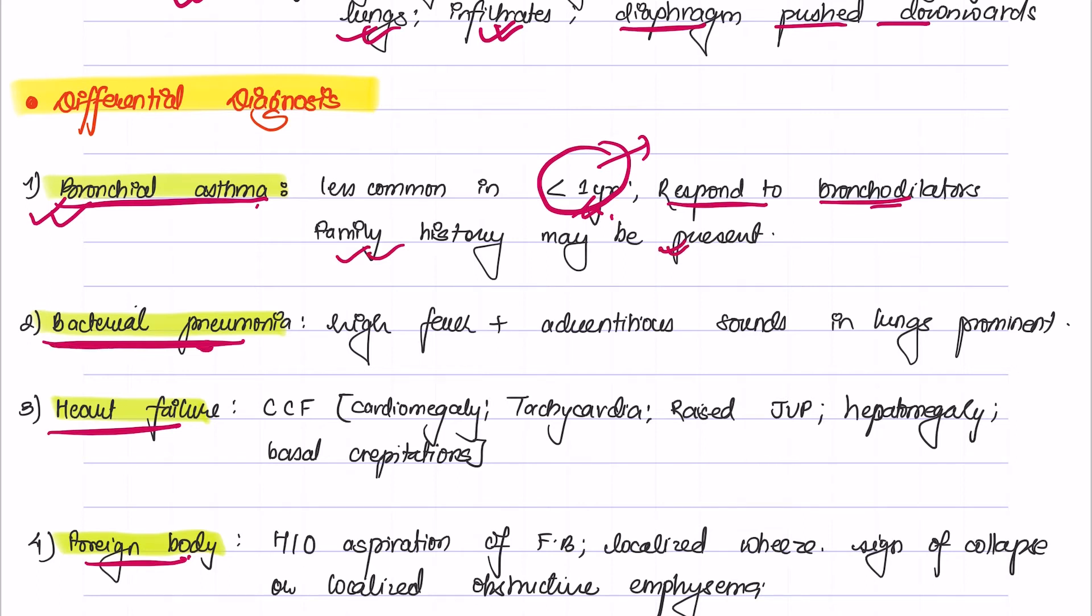Bacterial pneumonia may also be another differential diagnosis for bronchiolitis, but it can be differentiated by the presence of high fever and adventitious sounds in the lungs.